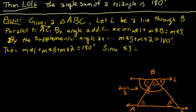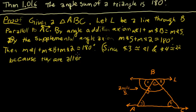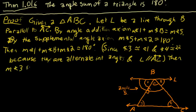Since angle 3 is congruent to angle 1, and angle 4 is congruent to angle 2, because they are alternate interior angles and L is parallel to line AC, then measure of angle 3 plus measure of angle B plus measure of angle 4 equals 180 degrees.